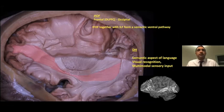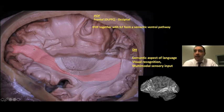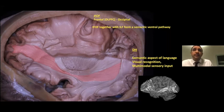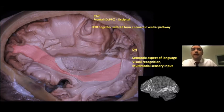The inferior fronto-occipital fasciculus (IFOF) connects the frontal and occipital areas at the level of the limen insulae, just superior to the uncinate fasciculus. It especially projects to the dorsolateral prefrontal cortex in the frontal lobe, making it effective in high cognitive functions. Together with the ILF, the IFOF forms a semantic ventral pathway in the dominant hemisphere, playing a role in the semantic aspect of language, visual recognition, and multimodal sensory outputs. Damage to this fiber bundle in the dominant hemisphere may result in semantic paraphasia due to surgery, tumor, or any lesion.